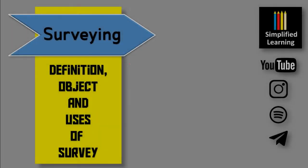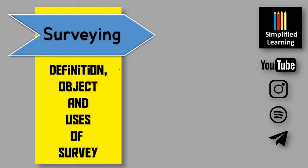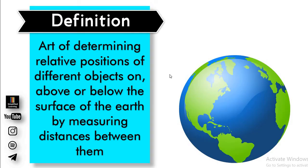In this lecture on surveying, we are going to see the introductory part: the definition of surveying, the object of surveying, and various uses of surveying. Surveying is defined as the art of determining relative positions of different objects on the surface of the earth, above the surface of the earth, and below the surface of the earth.